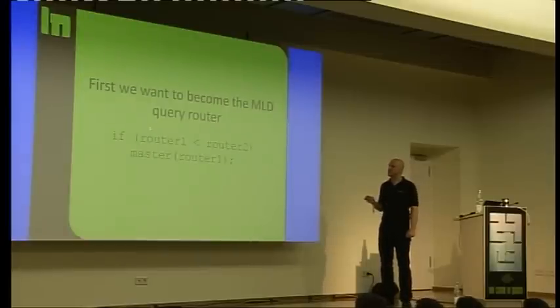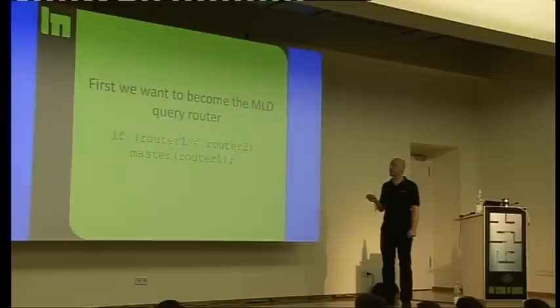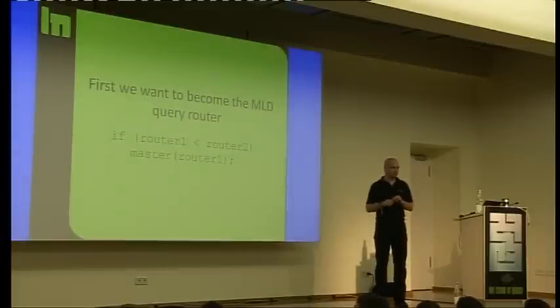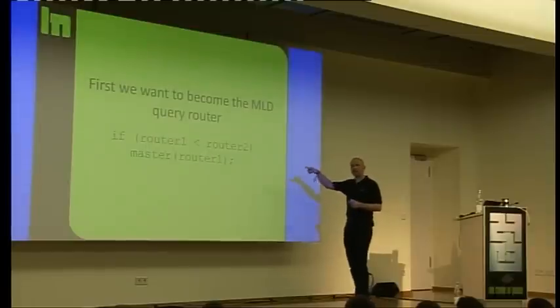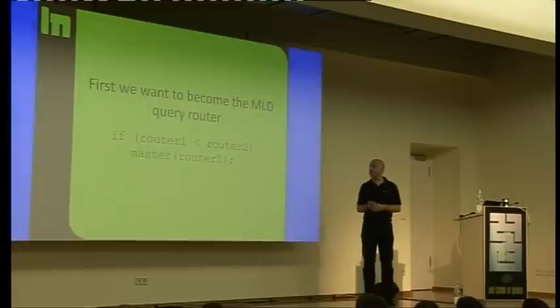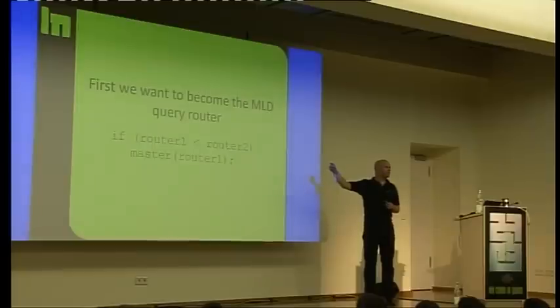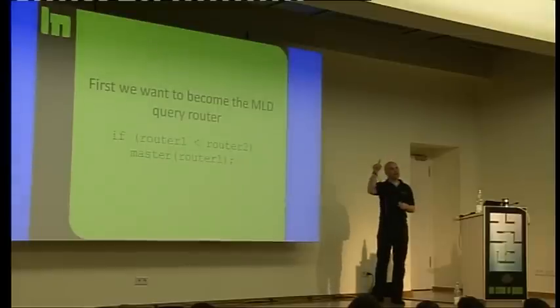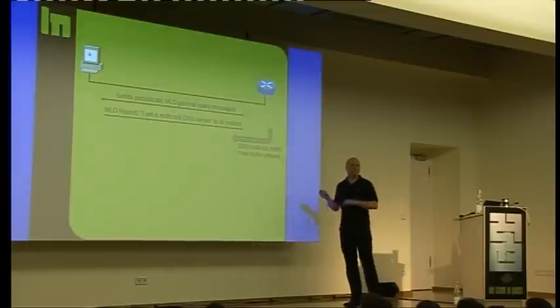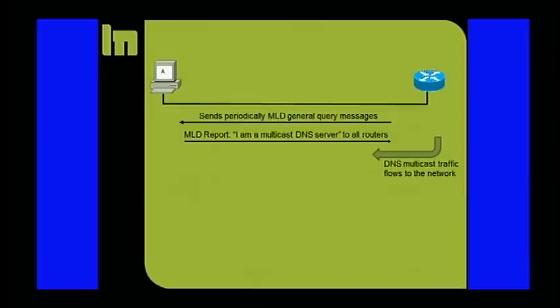First, we want to become the multi-listener discovery query router. This is basically very easy, because this is the source code. If router is smaller than router 2, then the new master is router 1. Smaller means the link-local address. The link-local address is FE80 and then normally the host part is the MAC address. But you can configure it. And the lowest one is FE80 and all zeros.